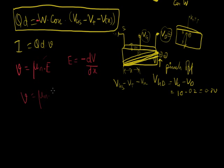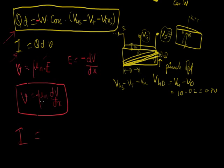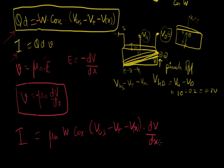V equals mu N times minus dV over dx. I just brought this minus here. Nothing to worry about. Let's go ahead and substitute this value and this value in the equation for current. And let's see what we get. So we get I equals minus times minus becomes plus. So we have mu N times W times Cox times VGS minus VT minus VX, V of X, times dV over dx.